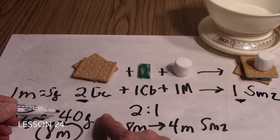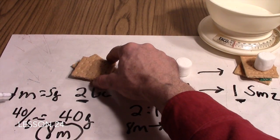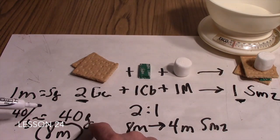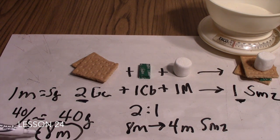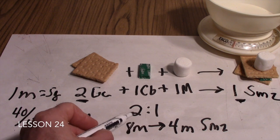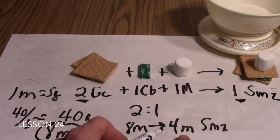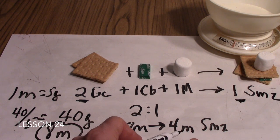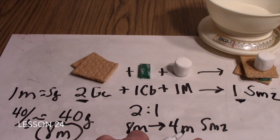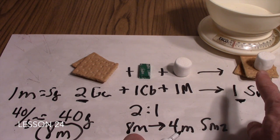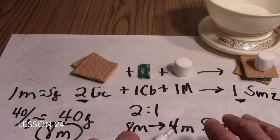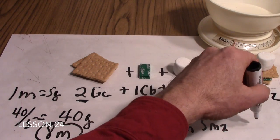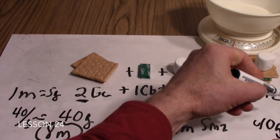We started with 40 grams, found that 1 mole of graham cracker weighs 5 grams, divided 40 by 5, and found we were starting with 8 moles of graham crackers. We put 8 moles into our 2-to-1 ratio and got out 4 moles. Now we are at 4 moles of s'mores. We need to convert that back to grams of product. Since 1 mole of s'more weighs 10 grams, and we produced 4 moles, that is 4 times 10 — so we will make 40 grams of s'mores.